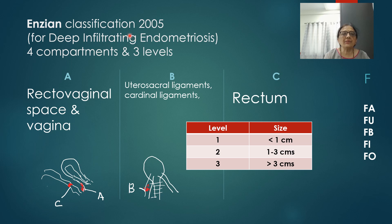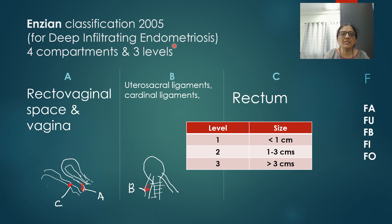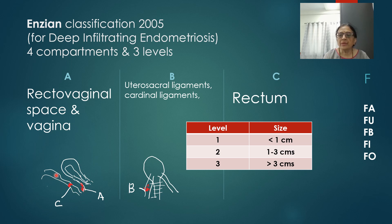The second classification is the Enzian classification, introduced in 2005 at a conference in Austria. It is specially designed to assess deep infiltrating endometriosis and was introduced as a supplement to, not a competition with, the ASRM classification. It has four compartments: A is for the rectovaginal space and vagina; B is for uterosacral ligaments and lateral cardinal ligaments as well as the pelvic wall; and C is mainly for the rectum and sigmoid colon.